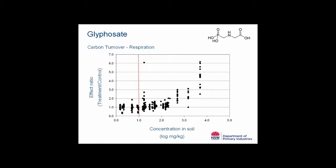What is most noticeable is the scatter of data — some studies observe suppression, some observe an increase. Generally speaking there are few significant effects, and if there is an effect it is usually not more than 50% either way. At concentrations higher than label application rates you can see a stimulation of respiration, generally put down to the fact that glyphosate contains both phosphorus and nitrogen and therefore provides additional nutrients to stimulate carbon turnover. The take-home message is that at label application rates there is not much effect on carbon turnover and respiration.